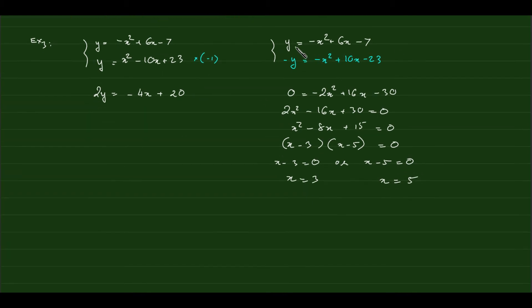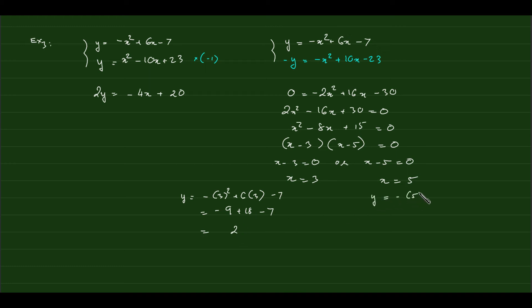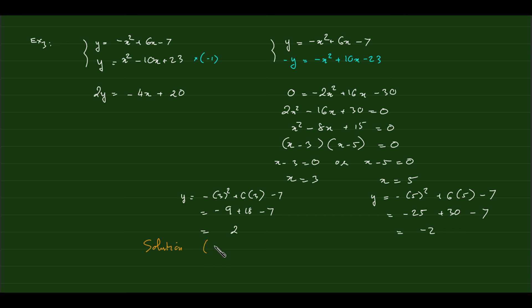After dividing, we get x² – 8x + 15 = 0. Factoring: (x – 3)(x – 5) = 0, so by the zero product property, x = 3 or x = 5.